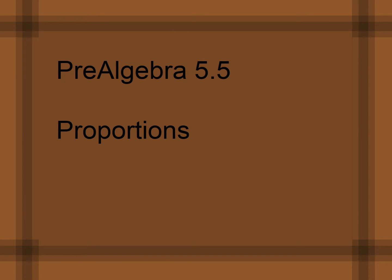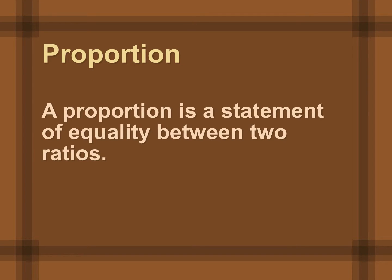We're going to talk about proportions, which is in section 5.5 of your BJU pre-algebra textbook. A proportion is just comparing two ratios. Remember in 5.4 we said that a ratio compares two numbers and is often written as a fraction. So if you have two fractions that are equal to each other — a statement of equality — then you have what's called a proportion.